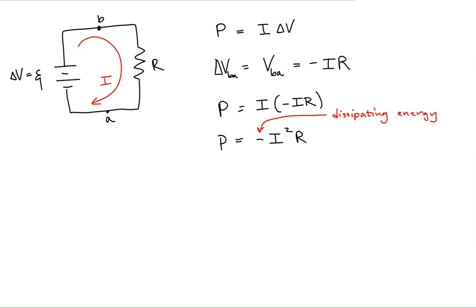This minus sign means that the resistor is dissipating energy. So as long as we are aware that resistors dissipate energy, I'll just say the power of the resistor,